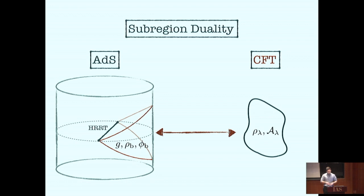Similarly, all the states of the sub-regions descend from the same global wave function for the CFT. This suggests that maybe we can think of building spacetime by appropriately describing how to glue together the entanglement wedges and the states of the sub-regions respectively.